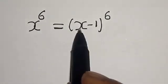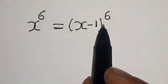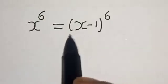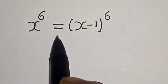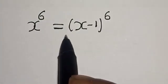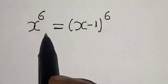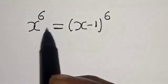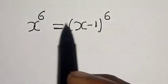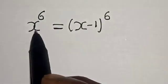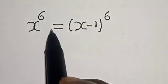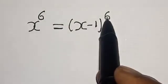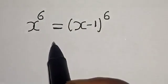x raised to power 6 is equal to x minus 1 raised to power 6. Hi everyone, welcome to my class. In this class we want to find the value of x from this given polynomial equation: x raised to power 6 is equal to x minus 1 raised to power 6.